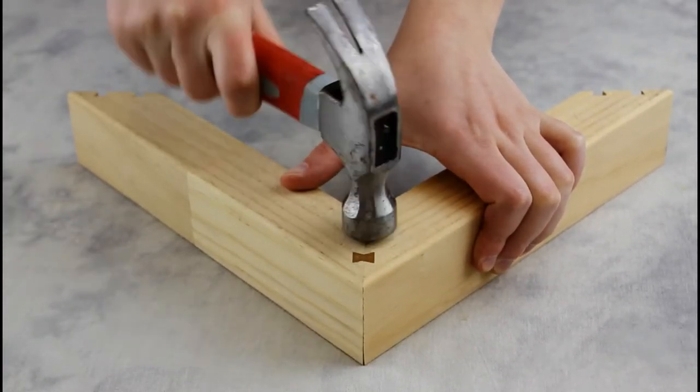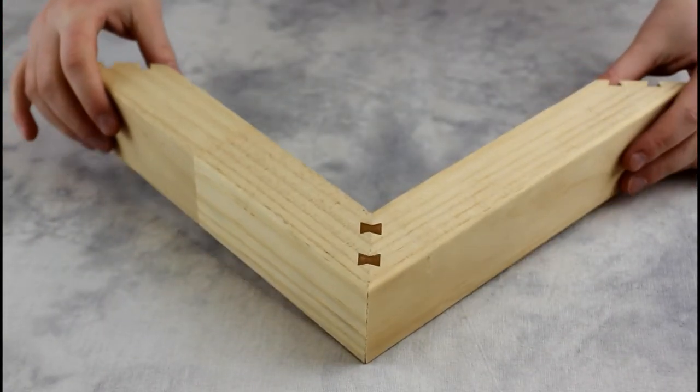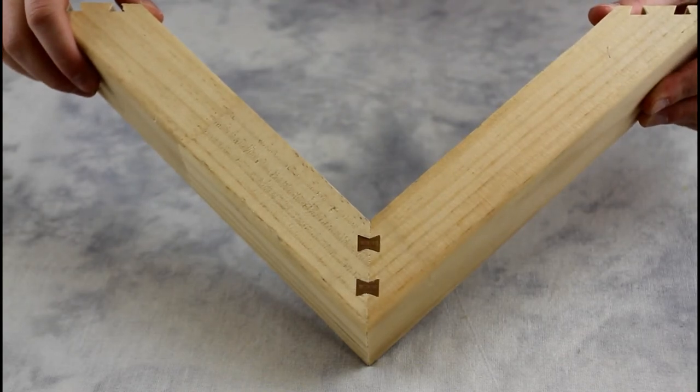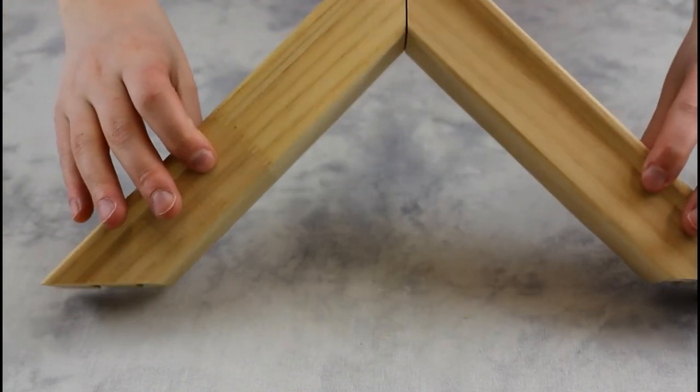This will be the first corner of our picture frame. We will then repeat the process of applying wood glue, joining moldings, adding keys, and hammering them into the frame for the rest of the corners of the picture frame.